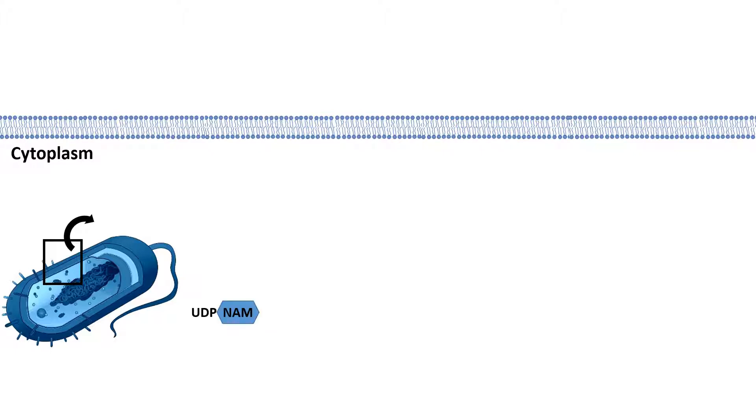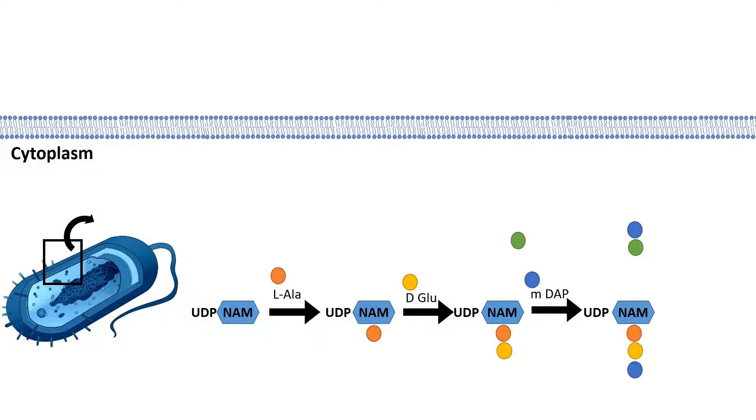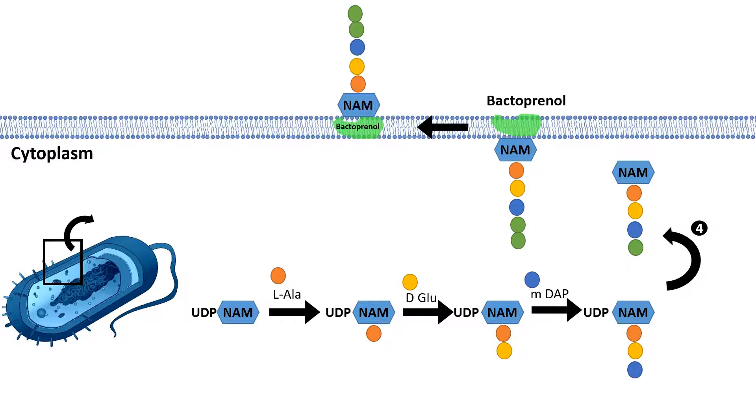Inside the bacterial cell, in the cytoplasm, UDP-linked N-acetyl muramic acid is linked with several pentapeptides by sequential enzymatic steps, and that is carried by a carrier known as bactoprenol, which is carrying the N-acetyl muramic acid-linked pentapeptide to the top of the cytoplasm. UDP-N-acetyl glucosamine interacts with N-acetyl muramic acid, and thereby it forms the basic subunit for formation of the cell wall.